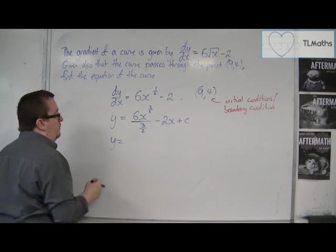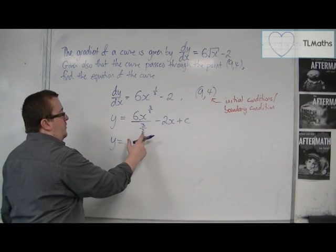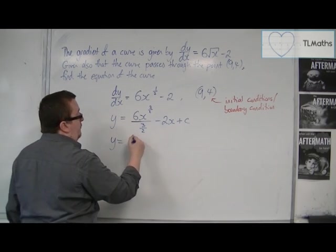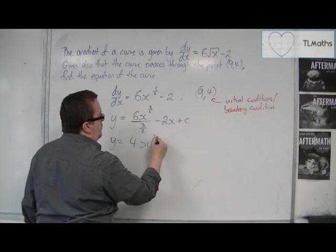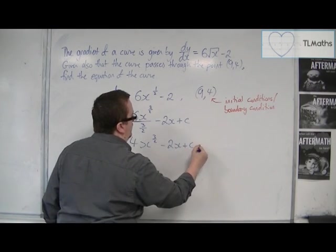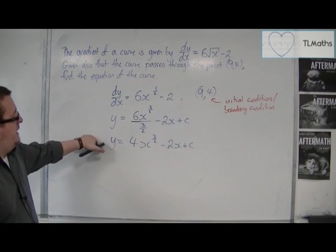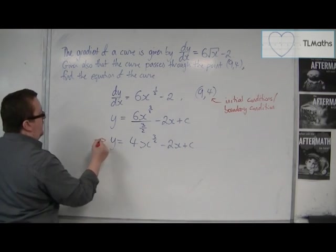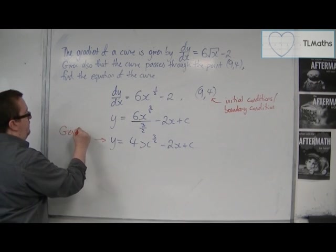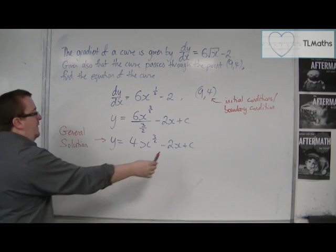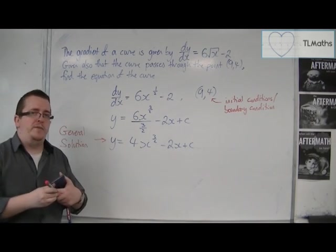And so y = 6 divided by 3/2 is the same as 6 times 2/3. So 12 over 3, so 4x^(3/2) - 2x + c. This is what we refer to as the general solution of a differential equation, because we have this plus c constant of integration.